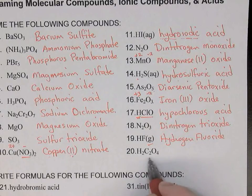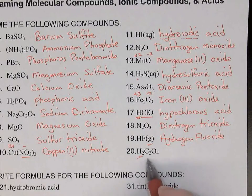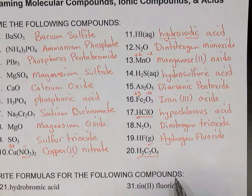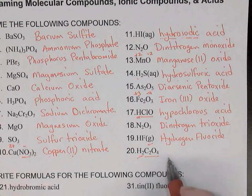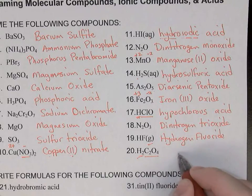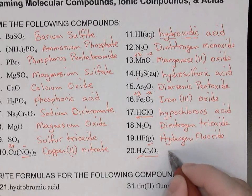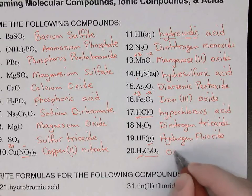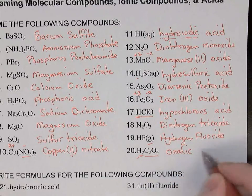This next one is an acid — hydrogen bonded to the oxalate ion. Oxalate ends in -ate, so the acid name will have the suffix -ic. So oxalate becomes oxalic acid.